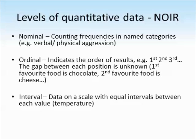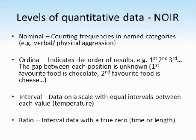Interval data is on a scale with equal intervals between each value, so something like measuring temperature in degrees Celsius. And ratio data is similar to interval data. It's still on a scale with equal intervals but here we have a true zero. So something like time or length can't go into minus numbers.